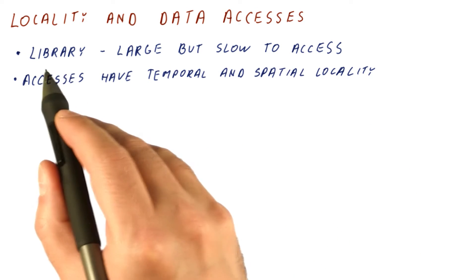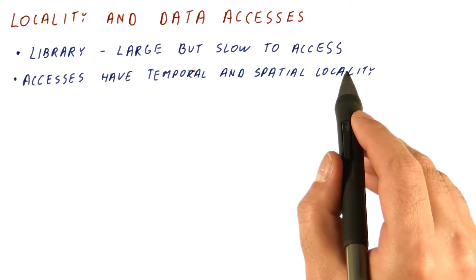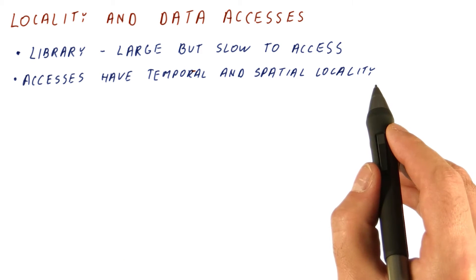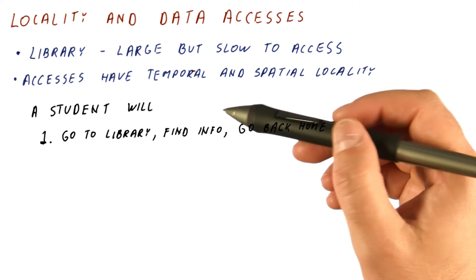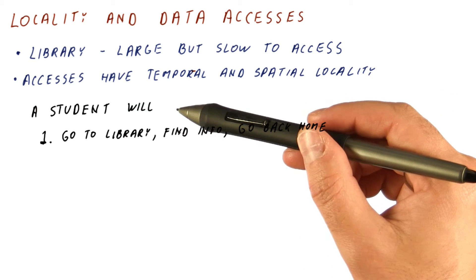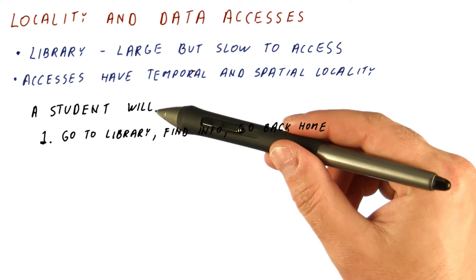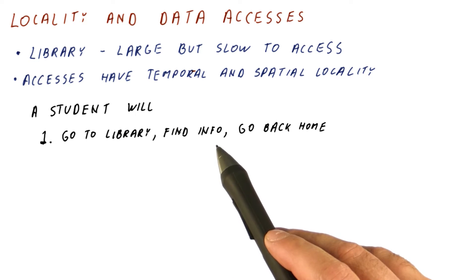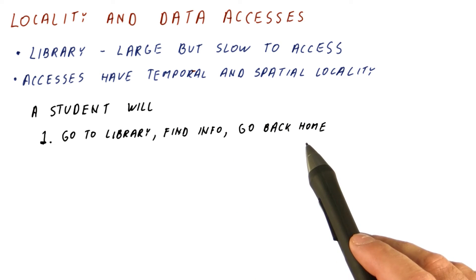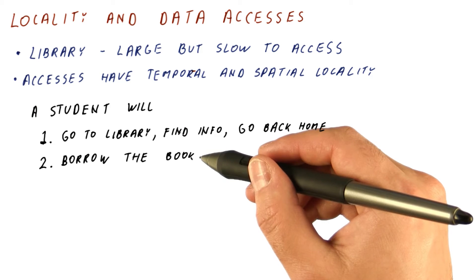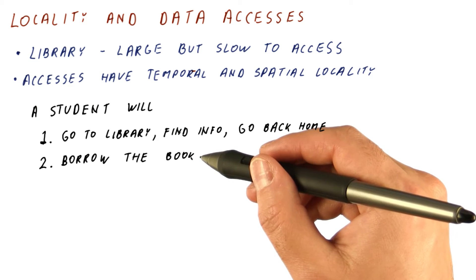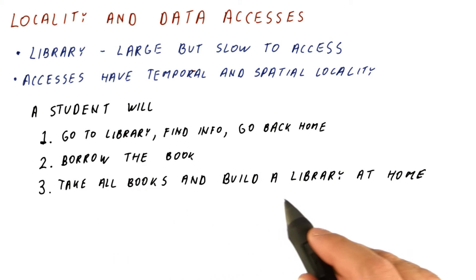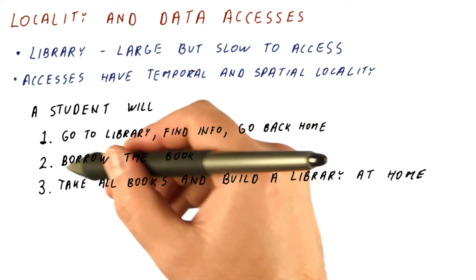Continuing our library-based locality and data access example, we have seen that the library is large but very slow to access, and that accesses to information in the library have temporal and spatial locality usually. So when a student needs a piece of information from the library, what should he do? Should he go to the library, find the information, read it, and then just go back home? Should he borrow the book and take it home so that future accesses are much faster? Or should he take all the books and build a library at home?